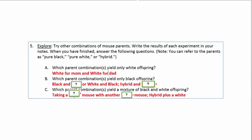But take a look at number five B. I guided you for that one. So which parent combination will yield only black furred offspring? Now remember what we did in the lab to only get black furred offspring.